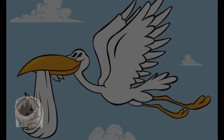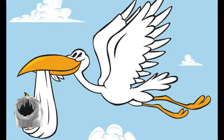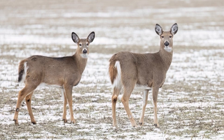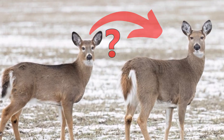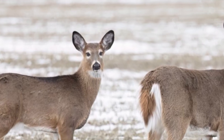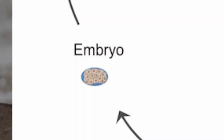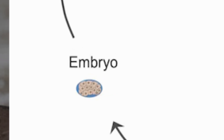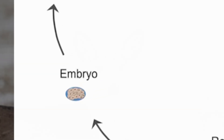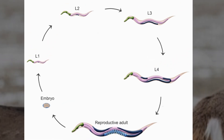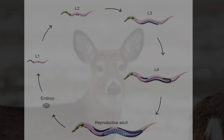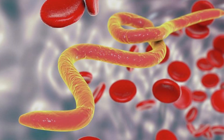Here, the worms will mature and start reproducing. When a male and female worm reproduce, they will start to release eggs. These eggs will hatch in the veins of the deer, releasing what's called an L1 larvae — just a baby worm that looks pretty much the same as an adult, just much smaller. These larvae will then be carried away by the bloodstream.